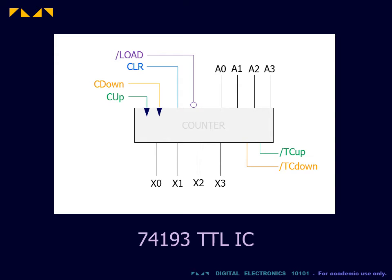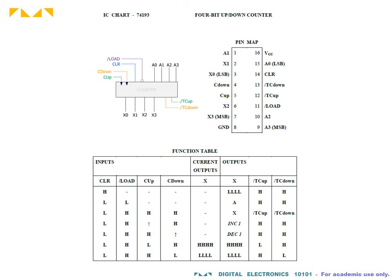The 74193 TTL integrated circuit is a 4-bit up-down counter. Here are its specifications. This is, in fact, a synchronous counter. It uses a different algorithm in which all the flip-flops are run on a common clock input. Hence, there is no ripple effect with the associated glitches.